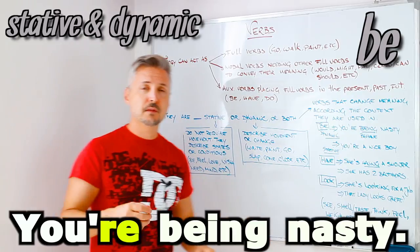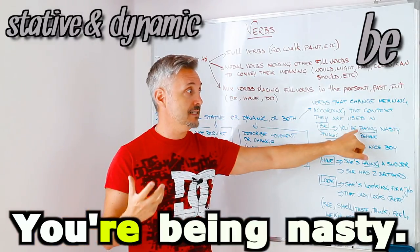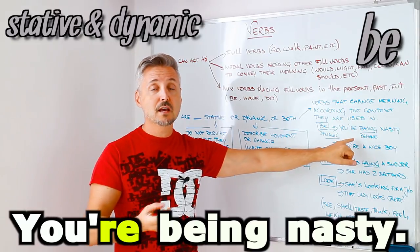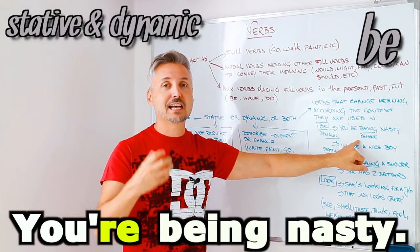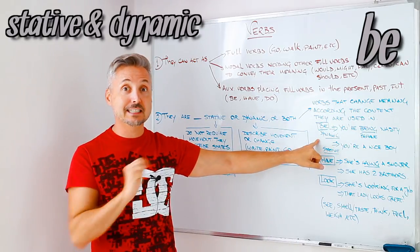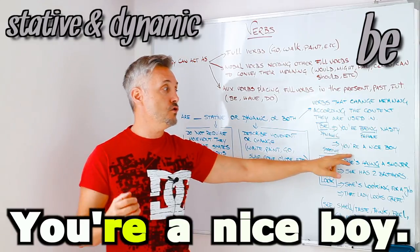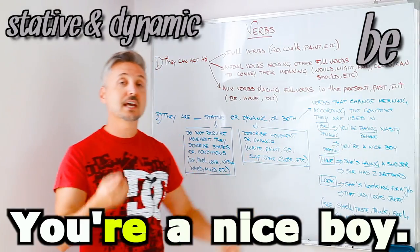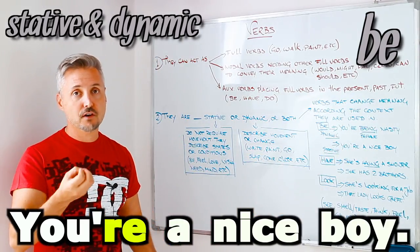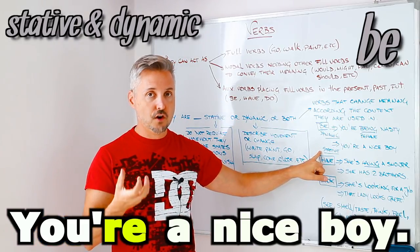Be can be dynamic and stative. So, be, you're being nasty. If I say, you're being nasty, in this case, being, the verb to be, means to behave in a nasty way. So, it's a dynamic verb, in this case, right? But, if I say, you are a nice boy, in this case, are, the verb to be, is stative, is a stative verb.